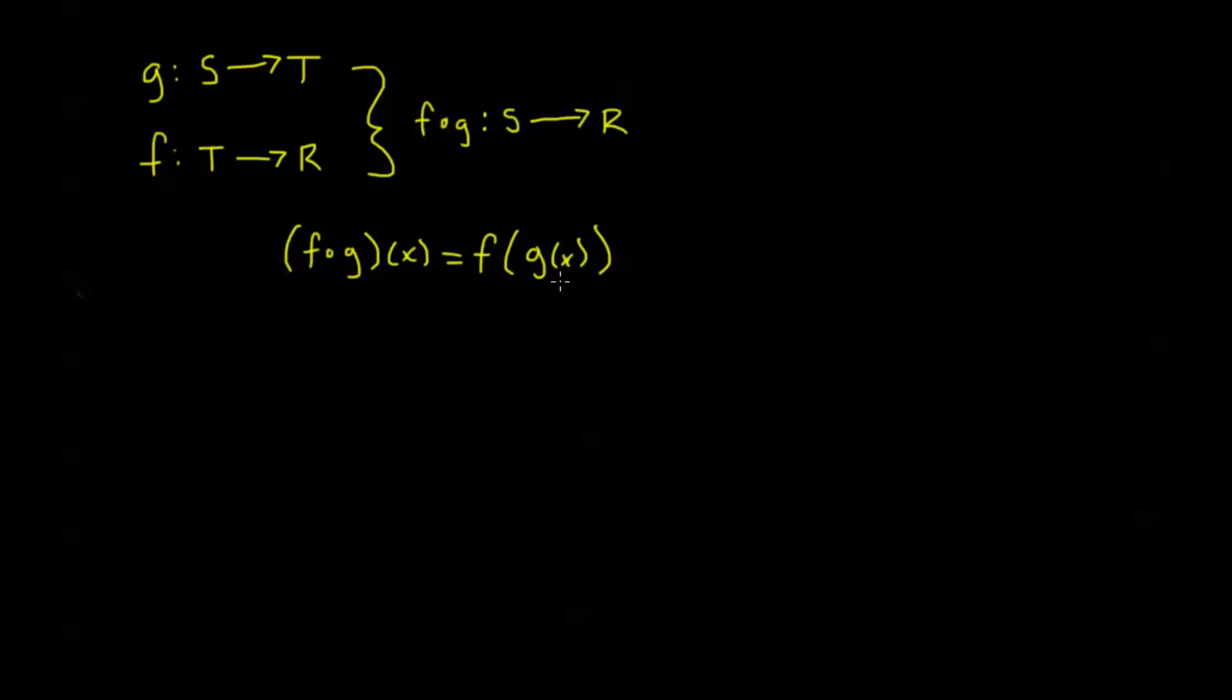Now, for this to be defined, I need to have that every value in the range of my g for whatever domain I'm using is a value in the domain of f. So we have this criteria that the domain of a composite function, the domain of f composed with g, is going to be equal to the values of x, and this is the largest possible domain of course, the values of x where x is an element of the domain of g and g of x is an element of the domain of f.